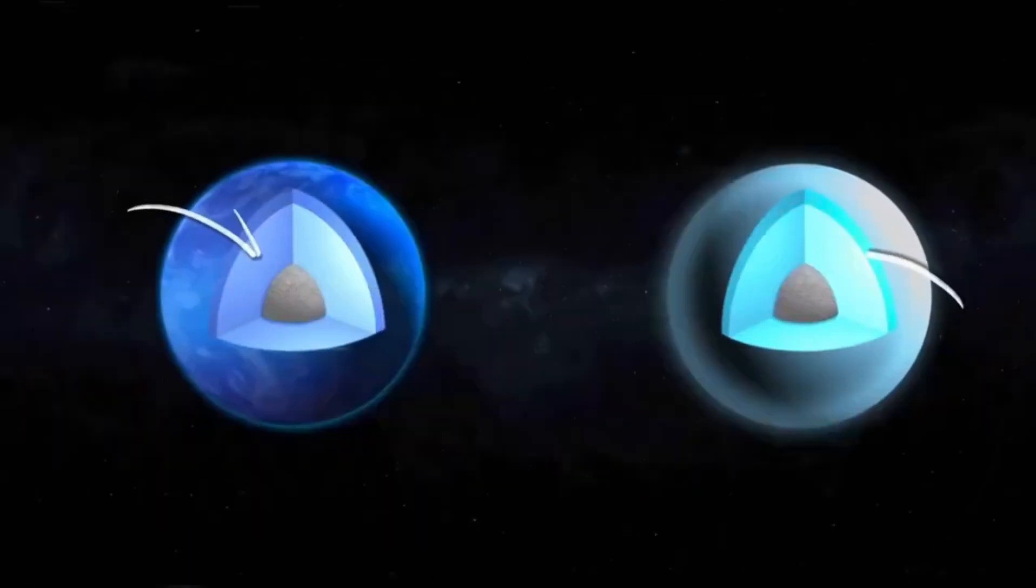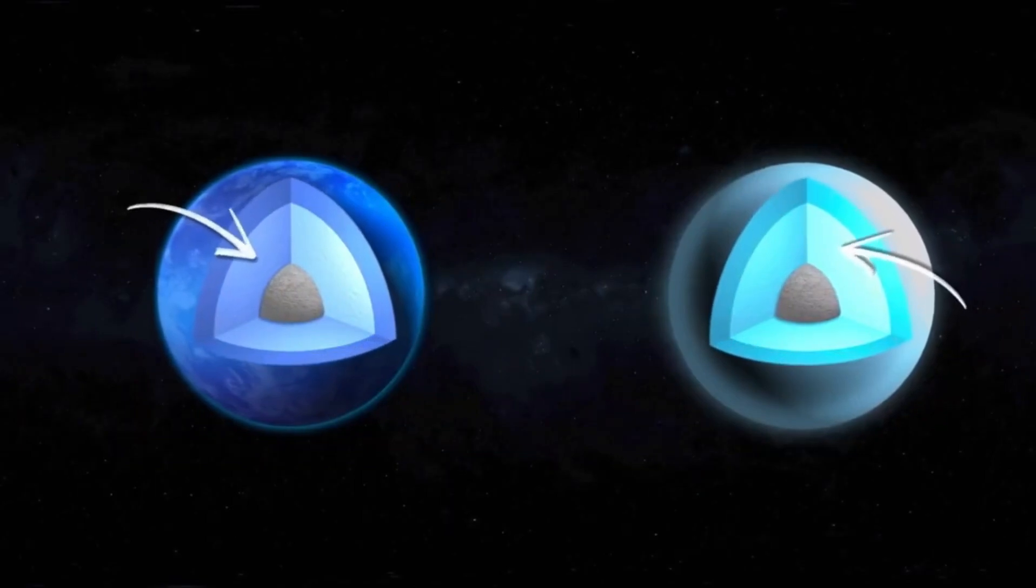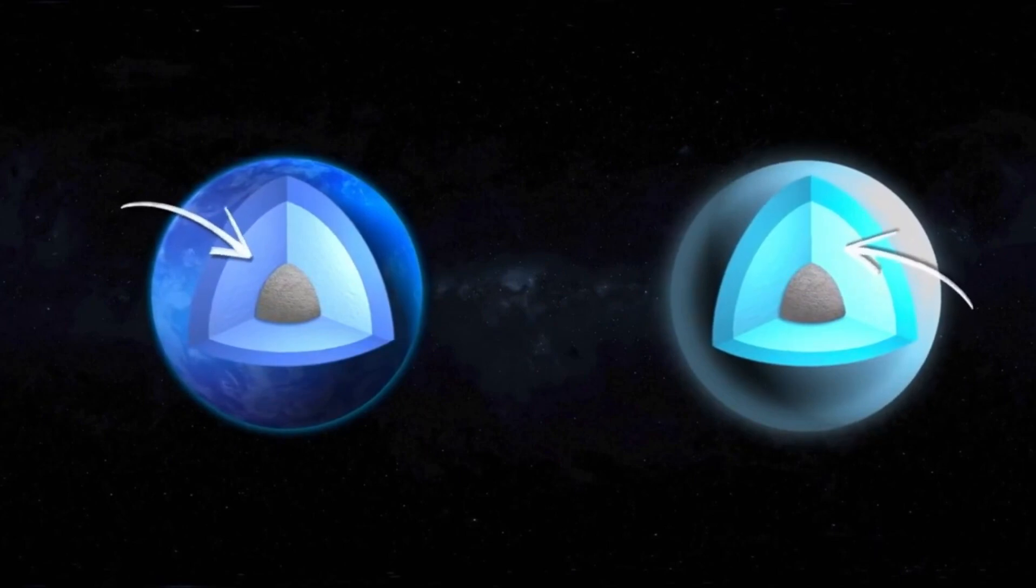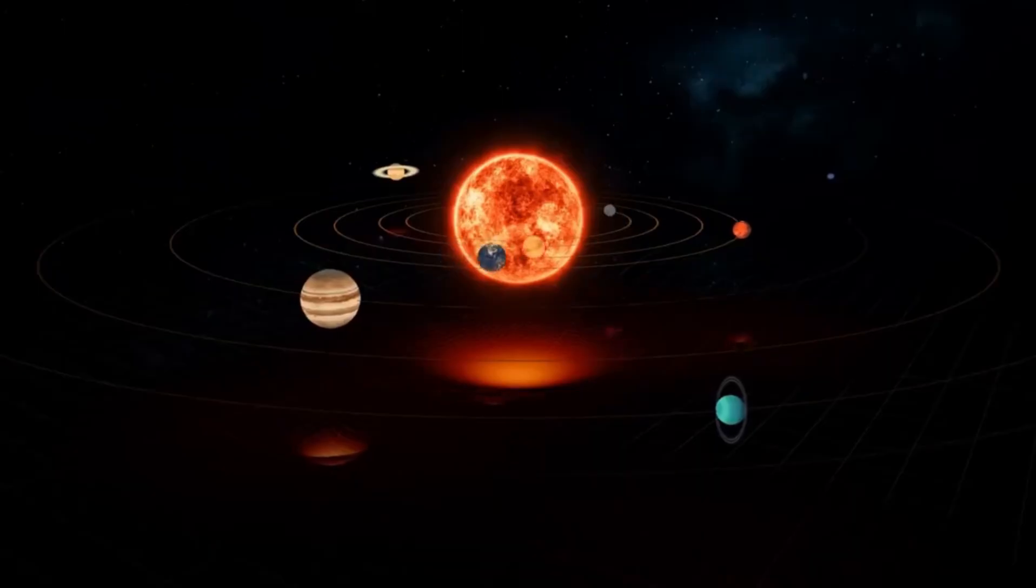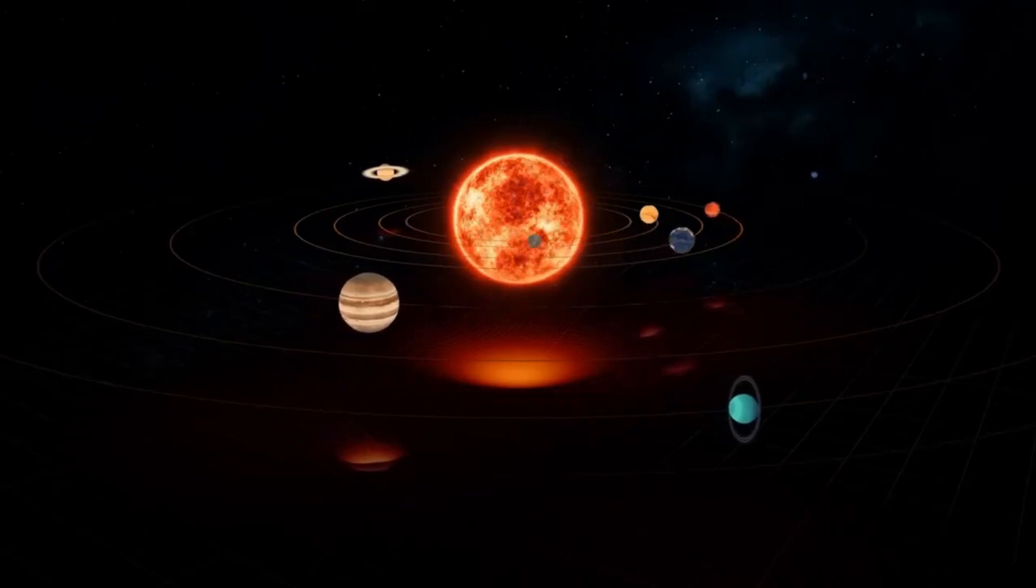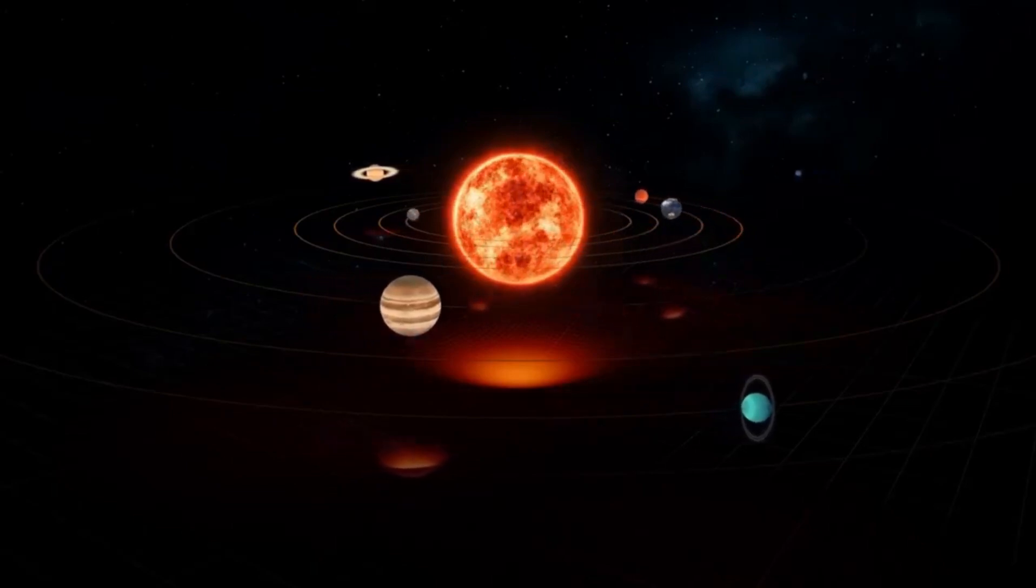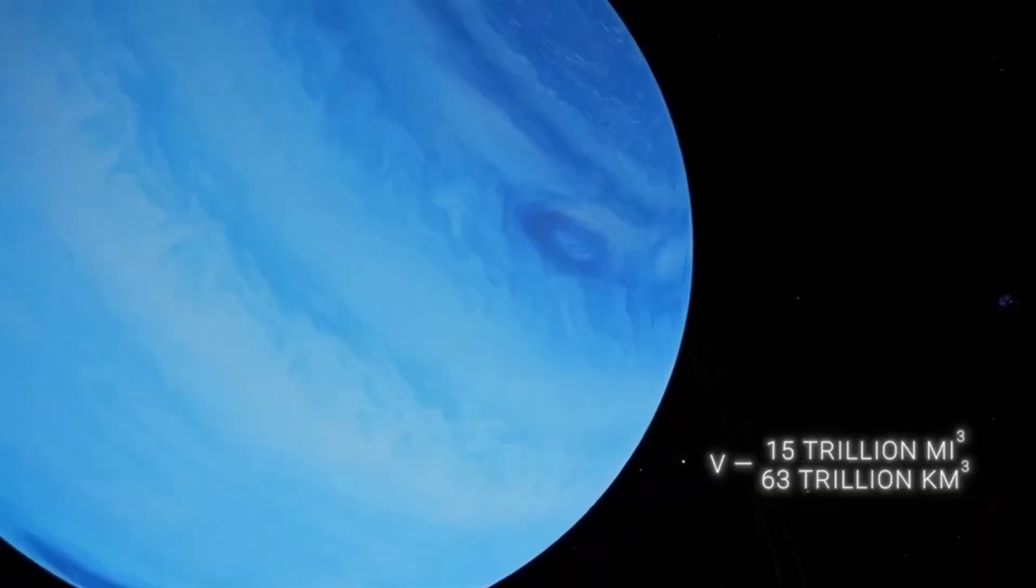Saturn is not only the sixth planet in our solar system but also the second largest after its direct neighbor, Jupiter. With an approximate distance of 1.4 billion kilometers from the Sun to Saturn, the planet takes about 29 years and 166 days to complete one orbit.